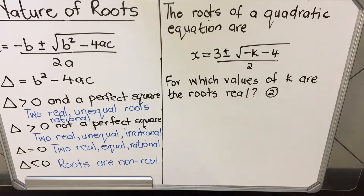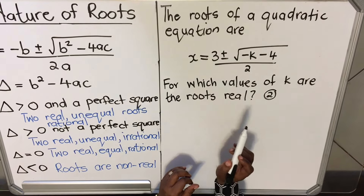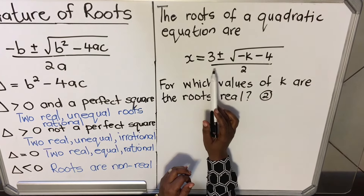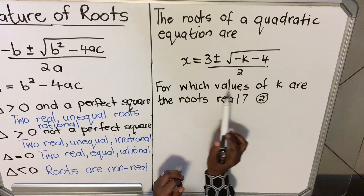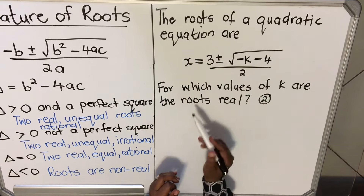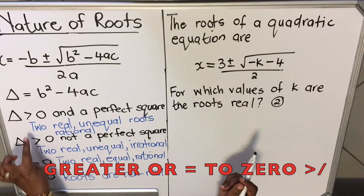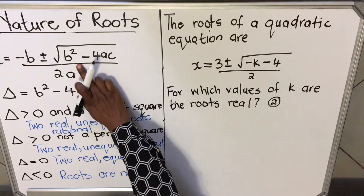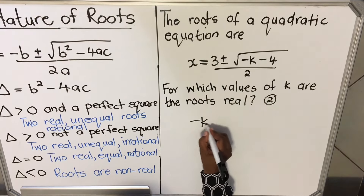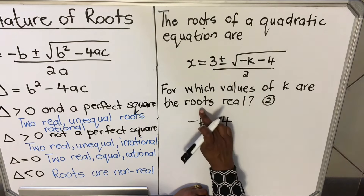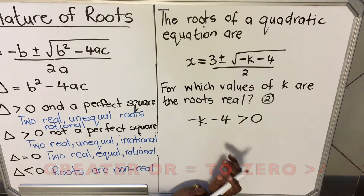Let's look at an exam-type question on the nature of the roots. The question gives you roots already calculated: x = (3 ± √(−k − 4)) / 2, and asks for which values of k the roots are real. For roots to be real, delta must be greater than zero. The expression under the square root, −k − 4, is our delta, so we set −k − 4 > 0.